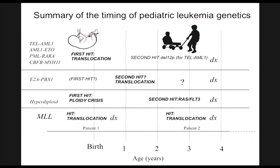On the left-hand side of this slide, we see a number of translocations where the first hit is prenatal, and for those leukemias, there tends to be a second hit after birth. At least one of these translocations, the E2APBX, is actually not prenatal.